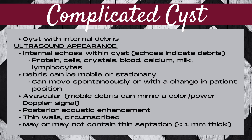The next category of cysts on a breast ultrasound is known as a complicated cyst. A complicated cyst is a cyst with some type of internal debris, whether it be proteinaceous debris, cells, crystals, blood, calcium, milk, lymphocytes, or some type of internal septation. The ultrasound appearance is a cyst with internal echoes indicating some type of debris. The debris can be mobile or stationary.